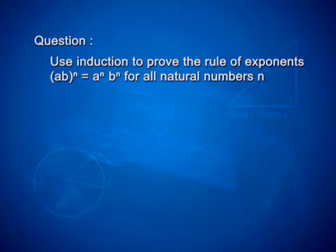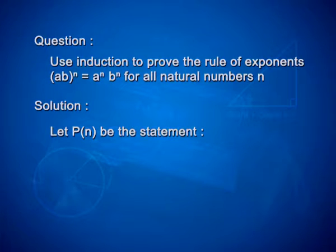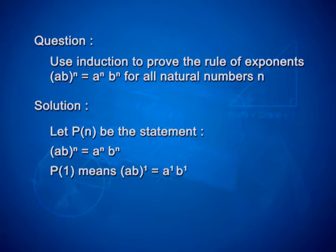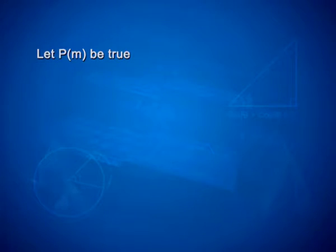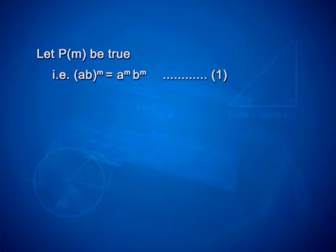Now we should solve a question using mathematical induction to prove the rule of exponents: ab whole raised to n is equal to a power n into b power n, for all natural numbers n. Let p of n be the statement: ab whole raised to n is equal to a raised to n into b raised to n. p of 1 means ab whole raised to 1 is equal to a raised to 1 into b raised to 1, that is ab equals ab, which is true. That implies p of 1 is true. Let p of m be true, that is ab whole raised to m is equal to a raised to m into b raised to m. Take this equation as number 1.